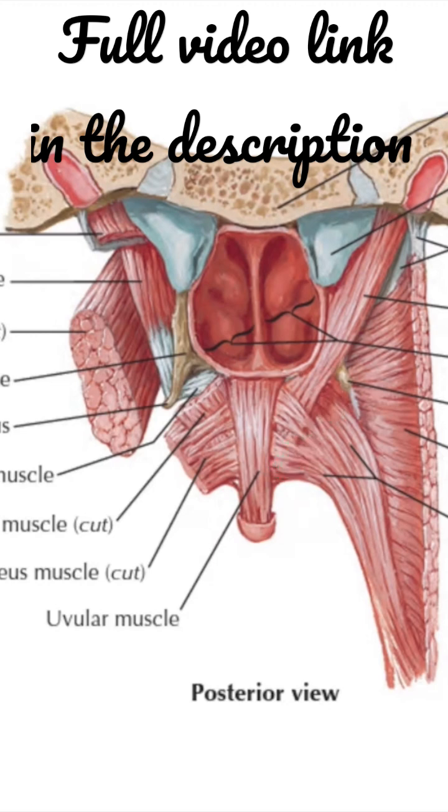In the soft palate, the muscles of both sides meet across the midline to form a sling.